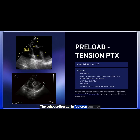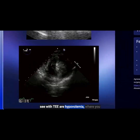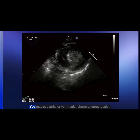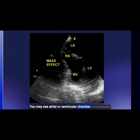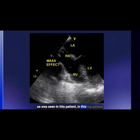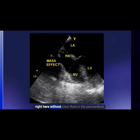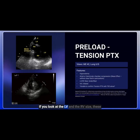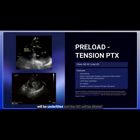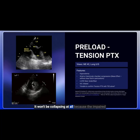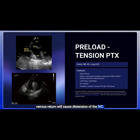The echocardiographic features you may see with TEE are hypovolemia, where you may just think it's a hypovolemic patient. You may see atrial or ventricular chamber compression, as was seen in this patient in this top picture right here, without clear fluid in the pericardium. If you look at the LV and the RV size, these will be underfilled, and the IVC will be dilated. It won't be collapsing at all because the impaired venous return will cause distension of the IVC.